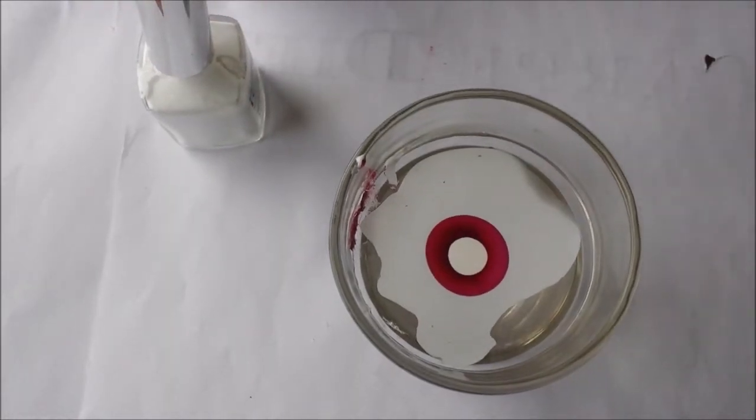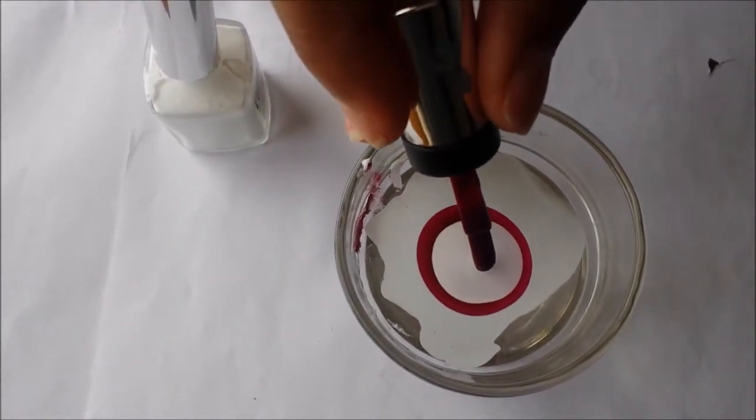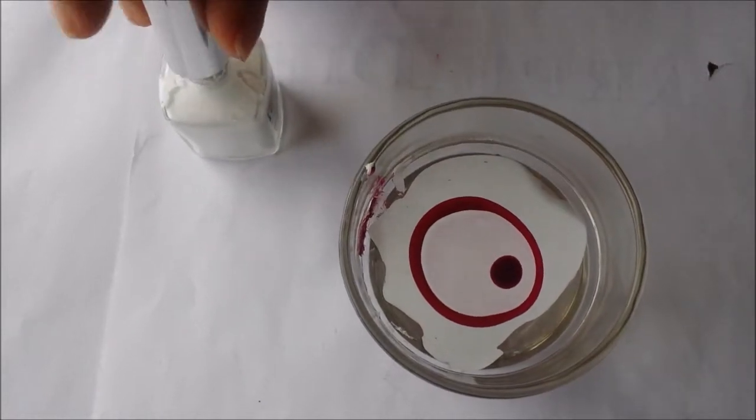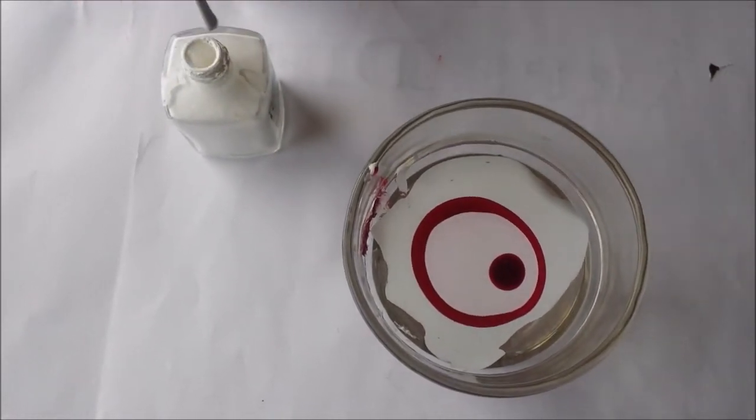Then place drops of nail polish on the top of the water alternating colors. Continue this step until you are satisfied with the amount of rings.